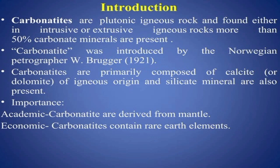Carbonatite is formed under high temperature and pressure conditions. It is found either in intrusive or extrusive igneous rock, where more than 50% of carbonate minerals are present. Carbonatite was introduced by Norwegian petrographer W. Brøgger in 1921. Carbonatites are primarily composed of calcite of igneous origin, and silicate minerals are also present.